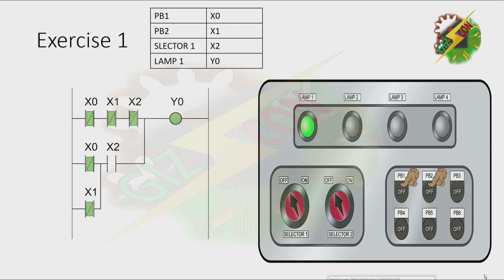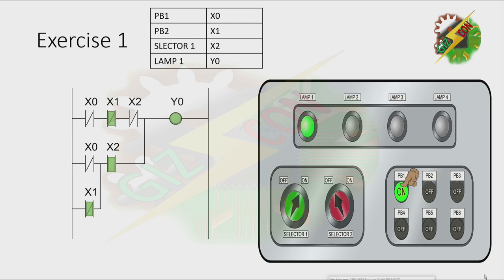Pressing both push buttons also turns the lamp off. Now with the selector switch on, pressing PB1 — nothing happens. Pressing PB2 — nothing happens. But when we press both push buttons, the lamp turns off. That's how we solve Exercise 1. Now let's go to Exercise 2.